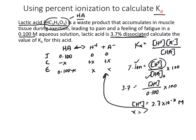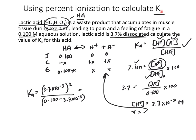Now that we know X, we can plug it into our equilibrium variables and then into our Ka expression. Ka equals (3.7 × 10⁻³)² divided by (0.100 minus 3.7 × 10⁻³). H⁺ and A⁻ have the same value, so we square that concentration. Plugging everything into the calculator gives us a Ka of 1.42 × 10⁻⁴ for lactic acid.